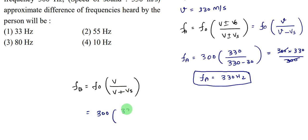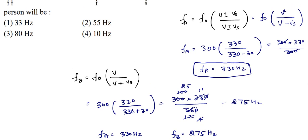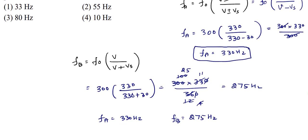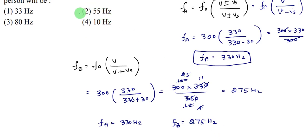We get 300 times 330 over 330 plus 30, which equals 275 Hertz. FB is 275 Hertz. The difference is Fa minus FB equals 55 Hertz. The second option is correct.